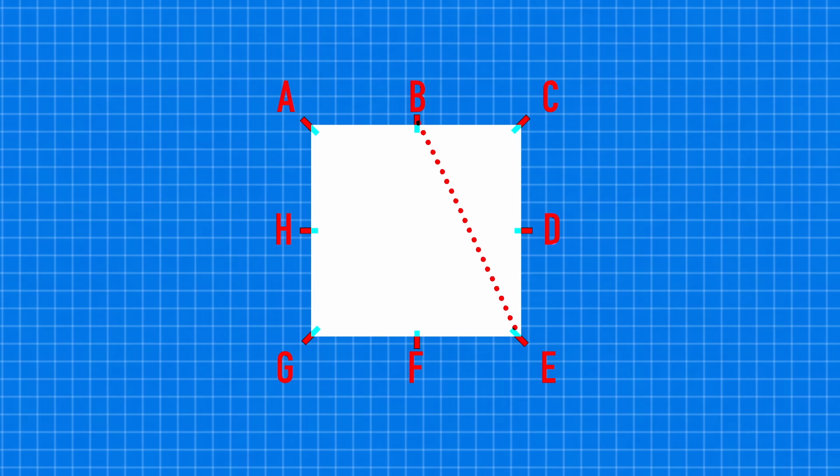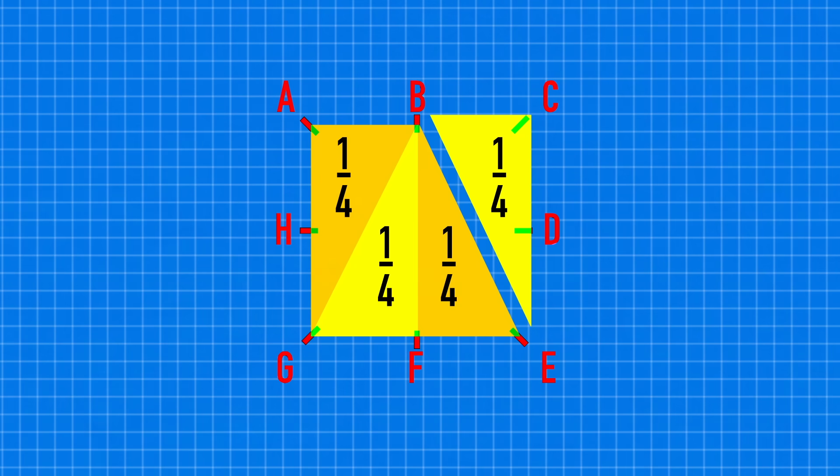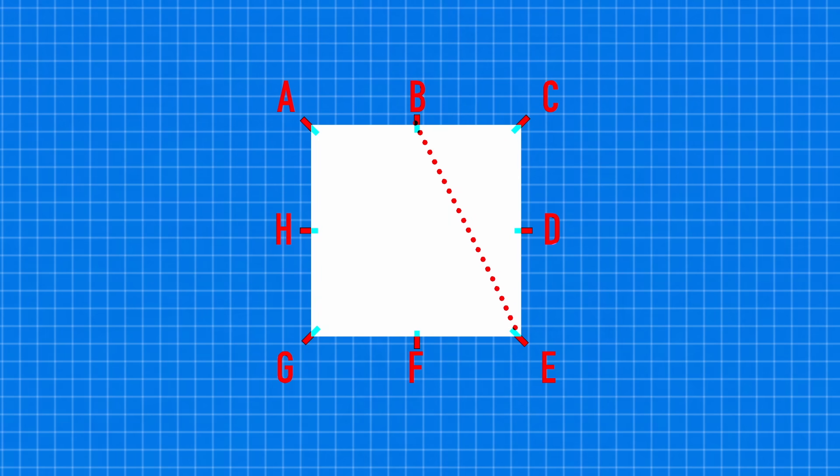What if we started with BE instead? That would also give us a quarter, and is there a way to shave just a bit more off? Both DG and CH look promising. If we make one more cut from A to F, we may start to notice something.